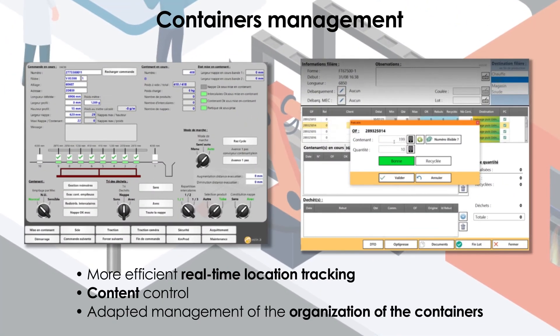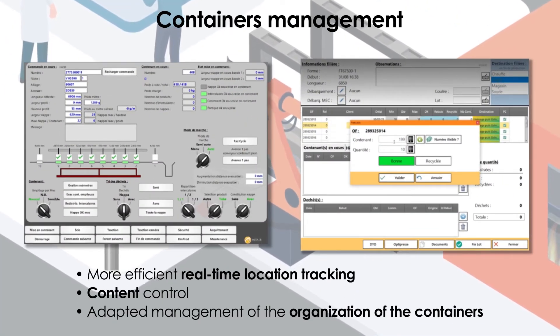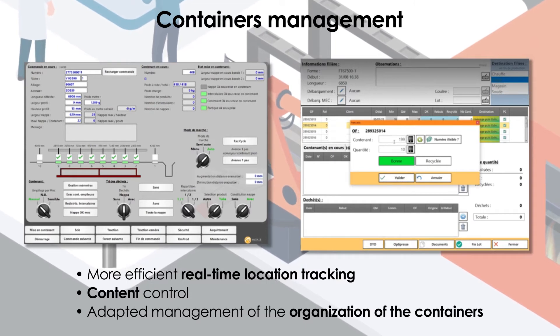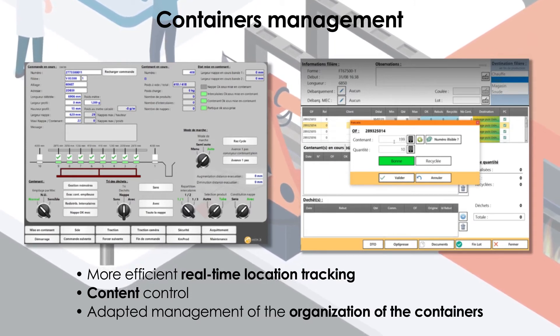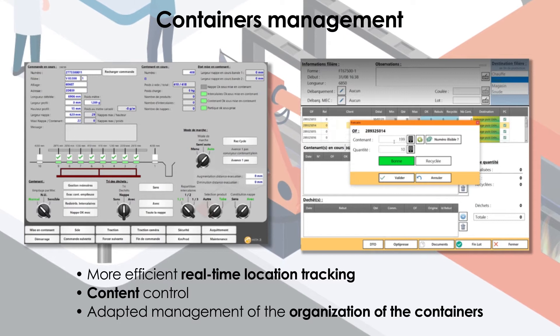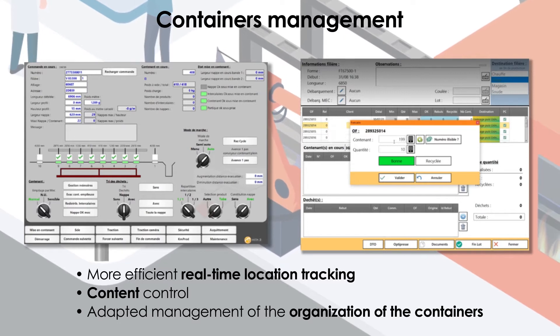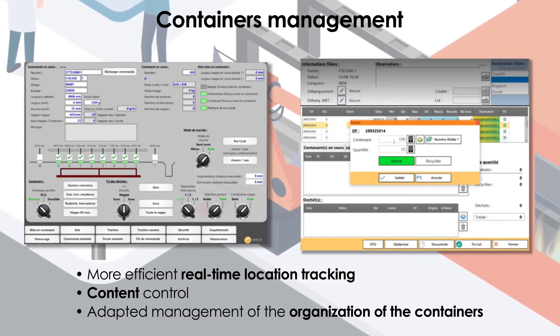KM Extrusion integrates the container management module for more efficient real-time location. Each container is weighed to ensure that the contents are correct, and the characteristics of the profiles are associated directly with the tool and are visible from the screen.